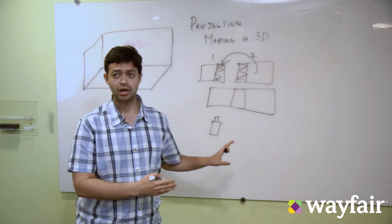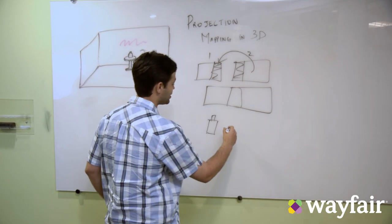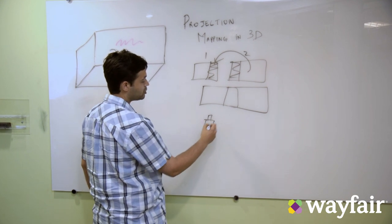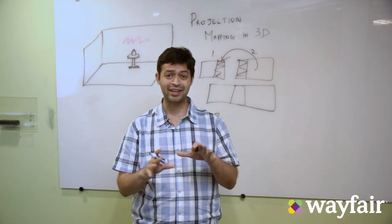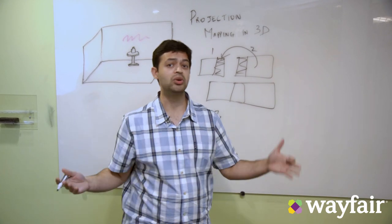Suppose if I wanted to generate a 3D model of this bottle by just looking at its image, how would that go about?